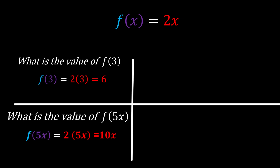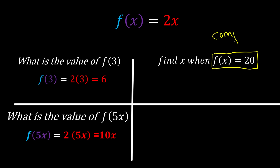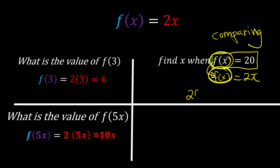Next, what if I give you something more mind-twisting: find x when I give you the answer already? Whenever this happens, we use the method called comparing. Whenever they give you the answer, we compare — because we can't just trust someone else's answer, right? So we know f(x) = 20, but f(x) also equals 2x. Since both are the same, 20 equals 2x. Solving this linear equation, x = 10.